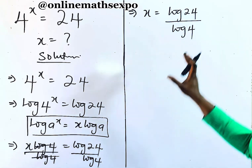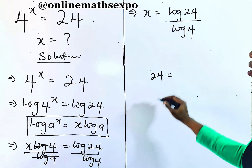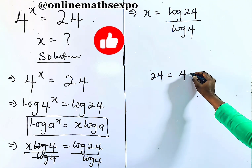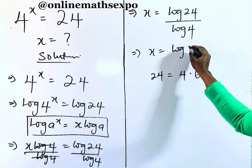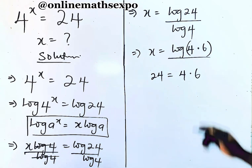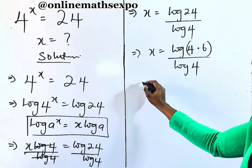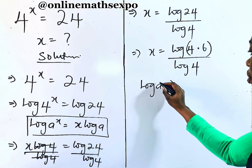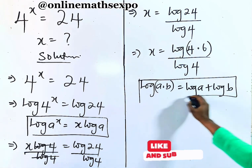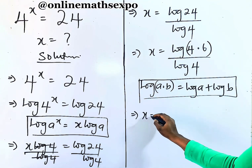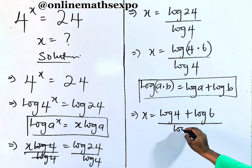Do you intend to leave it like this? No, it's not yet simplified. We know that 24 is the same as 4 multiplied by 6. So we can rewrite this as x is equal to log of (4 × 6) divided by log of 4. Remember, for every log of a multiplied by b, it's always log a plus log b. Applying this rule on the numerator gives us x is equal to log 4 plus log 6, divided by log 4.